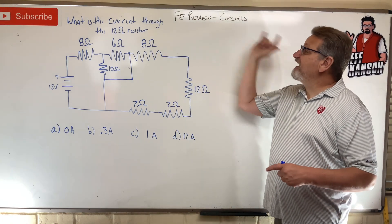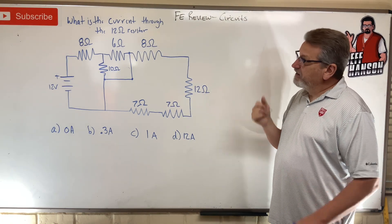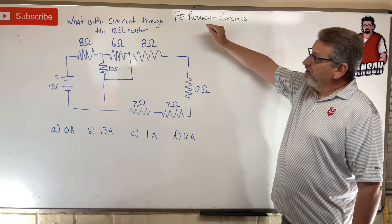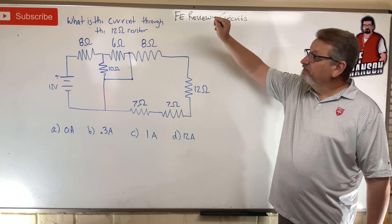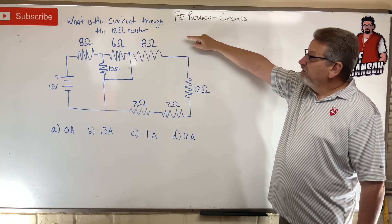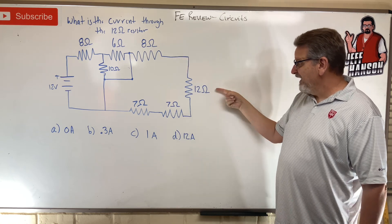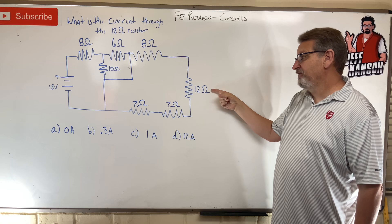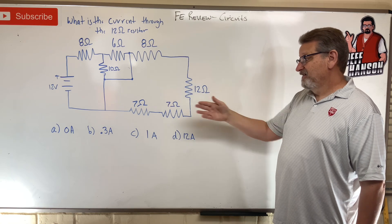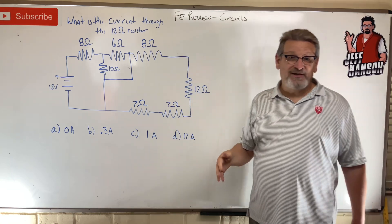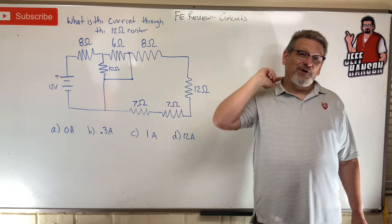Hello friends, welcome back to your review problem. Circuit theory - what is the current, we're talking current this time, through the 12 ohm resistor? Where in the world is that? Way over here, right. What's the current through that? There are your answer choices. Press pause, work it out, and when you come back I'm going to show you how to do it.